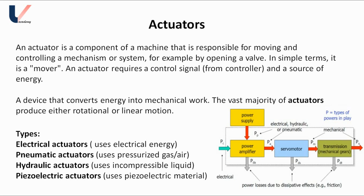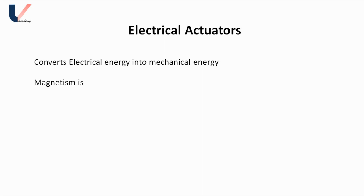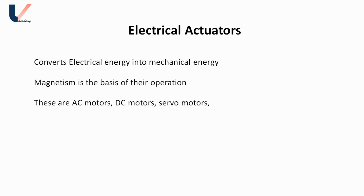An electrical actuator converts electrical energy into mechanical energy. The basis of operation of an electrical actuator is magnetism. Examples of electrical actuators are AC motors, DC motors, servo motors, and stepper motors.